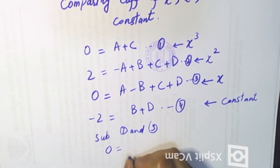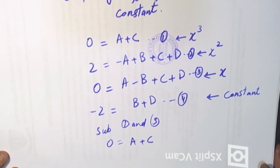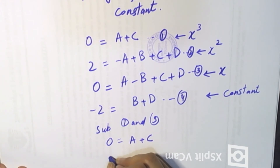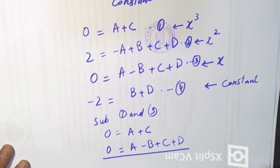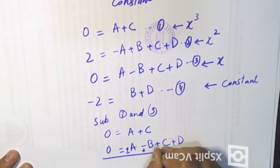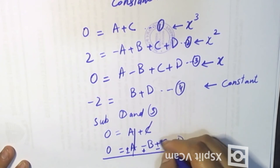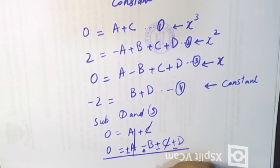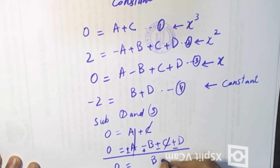A is equal to A plus C. Subtracting equations 1 and 3: A and C cancel out, B and C cancel out, giving us 0 is equal to B minus D.